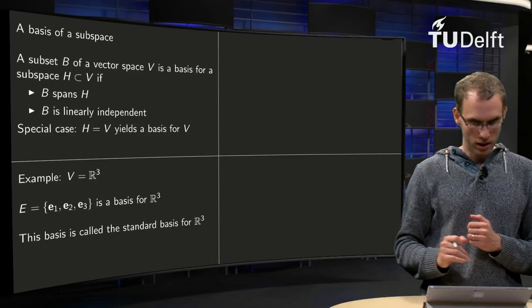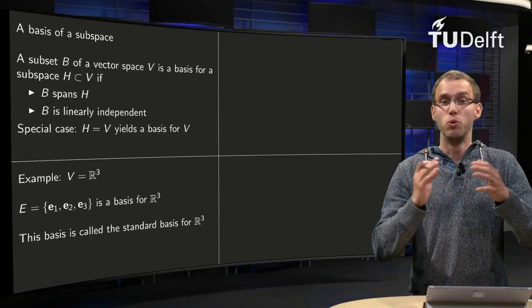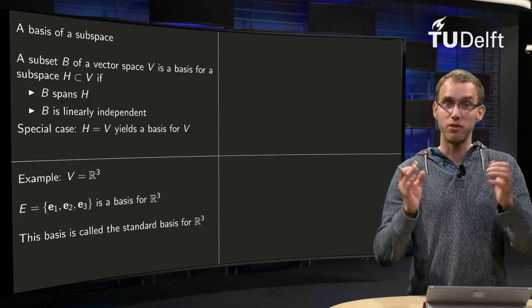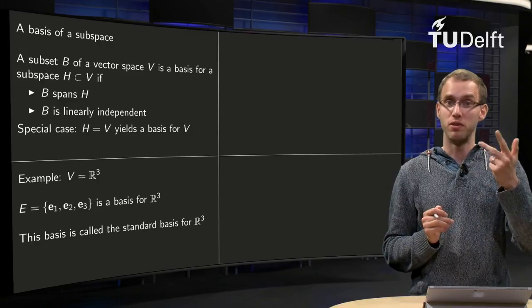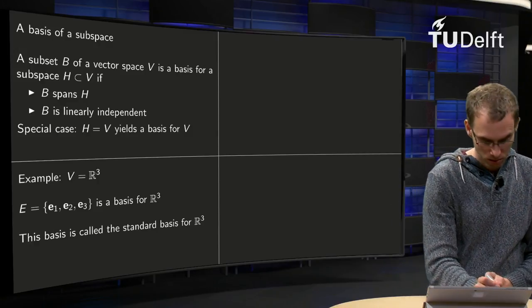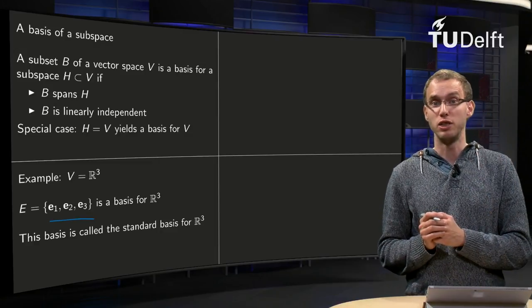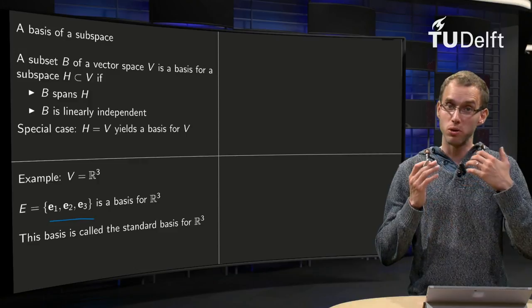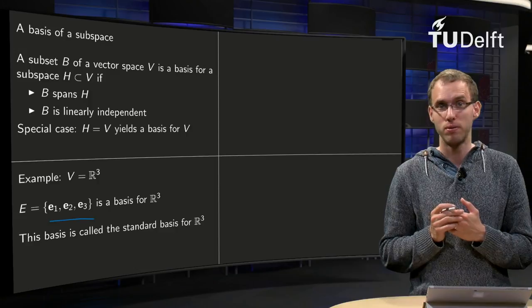Let's look at a few examples. First of all we have our normal vectors, say V equals R³. Then we know a basis, we can take E₁, E₂ and E₃, the vectors (1, 0, 0), (0, 1, 0) and (0, 0, 1). Those form a basis for R³ as you know, and those are called the standard basis for R³. It is the easiest basis you can think of.